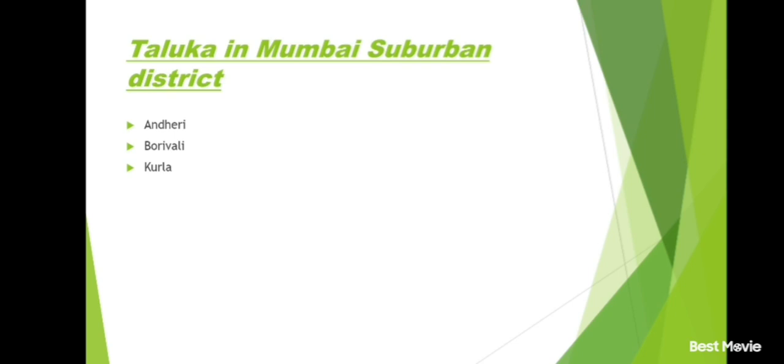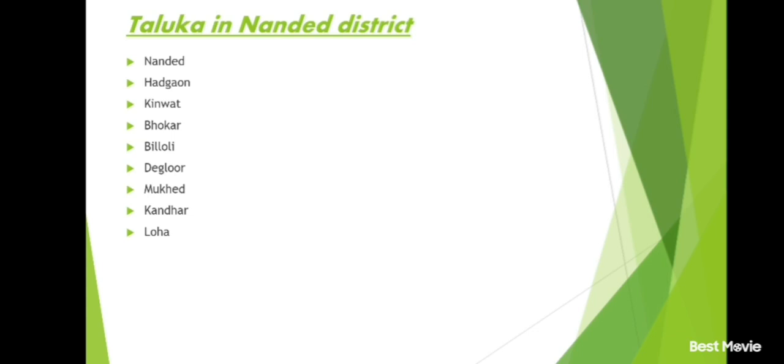Mumbai City district and its talukas: only one taluka, Mumbai City. Mumbai Suburban district and its talukas: Andheri, Borivali, Kurla.